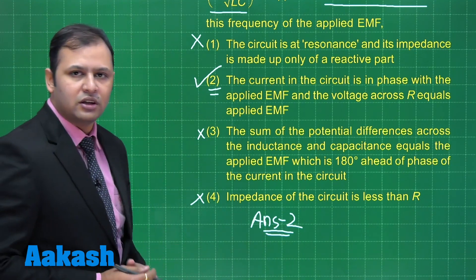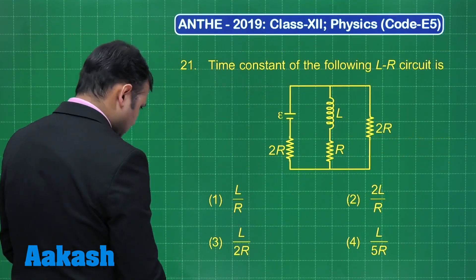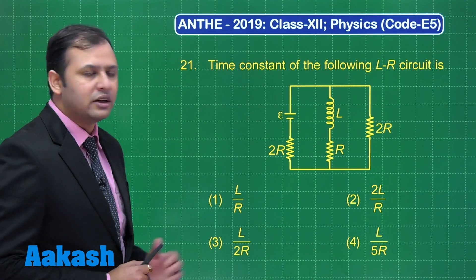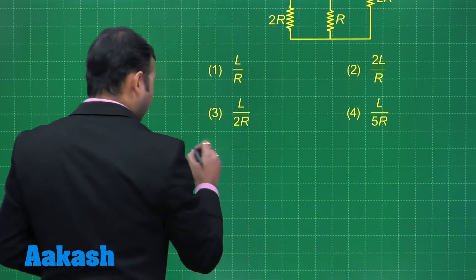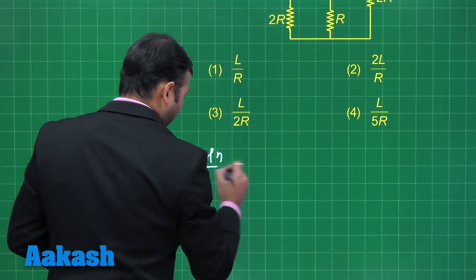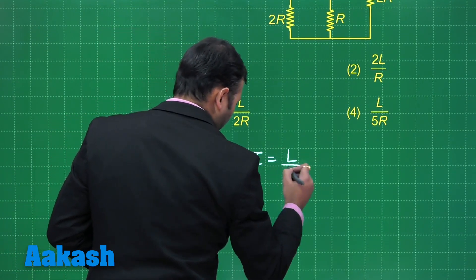I hope you have understood this one. Now, let us move on to our next question. Now, this question, we have to find the time constant of the given LR circuit and here it is a simple case where time constant is given by tau which is equals to L by R net, right?